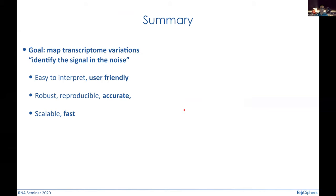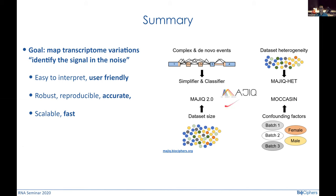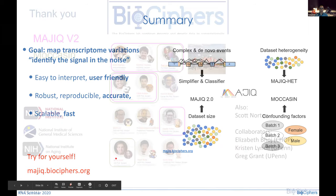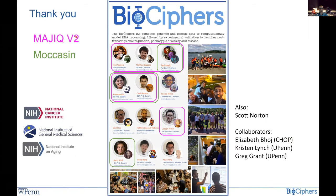To summarize: our goal is to extract signal from noise, mapping transcriptomic splicing variations from RNA sequencing with a user-friendly, accurate, and fast tool. We achieve this with the new version of MAJIQ and MOCCASIN. MOCCASIN is already on bioRxiv and the paper and tool will be out soon. MAJIQ 2 is already out with some new features released and more coming. There's a very active support group and many tutorials. Many people contributed to the work on MAJIQ and MOCCASIN, and we encourage you to use these tools.